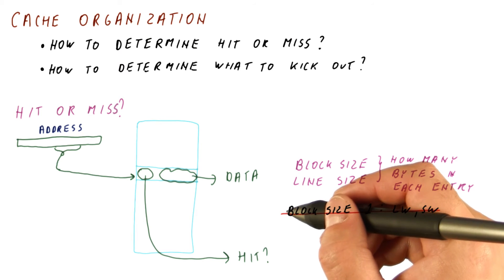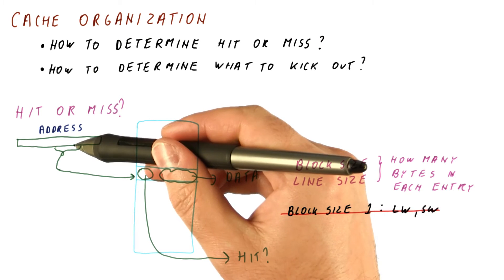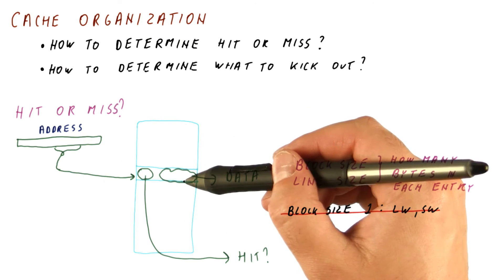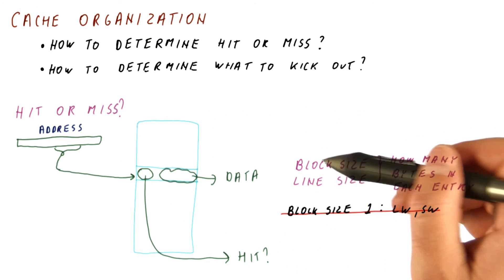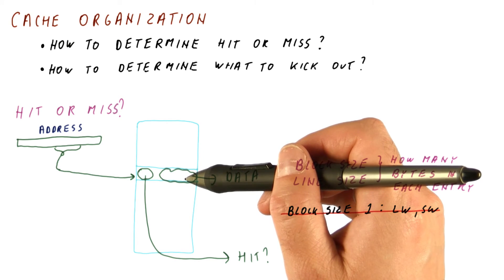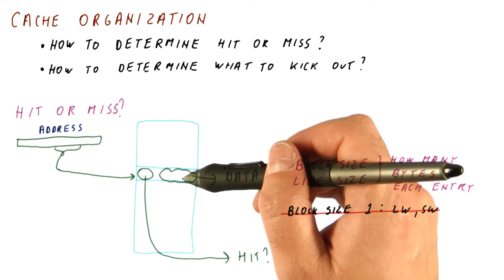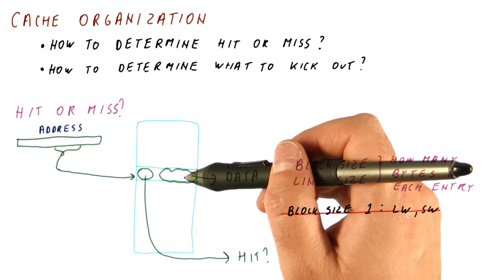The next thing that we want to consider when deciding the block size is spatial locality. If we miss in the cache on one access, we will bring in an entire block worth of memory stuff into the cache. So if there is no spatial locality, we want to bring in just what we are currently accessing.